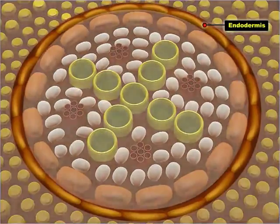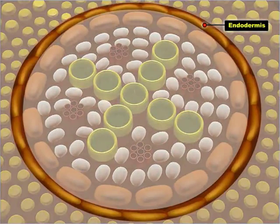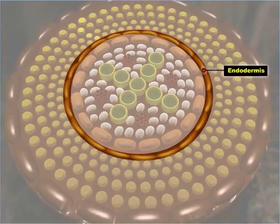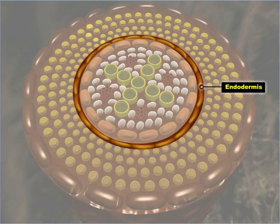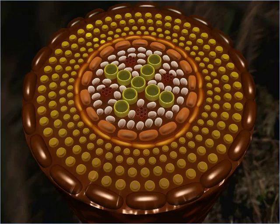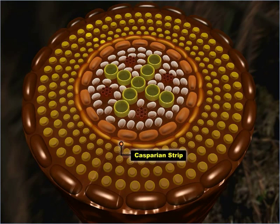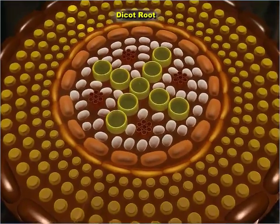The innermost layer of cortex is the endodermis. The endodermis surrounds the vascular tissues and lies between the cortex and the pericycle. The endodermis has a peculiar band of thickenings made up of lignin and suberin. Together, these form the casparian strip. Due to the presence of the suberin thickening, the casparian strip prevents leakage or diffusion of nutrients into the outer layers of the roots.